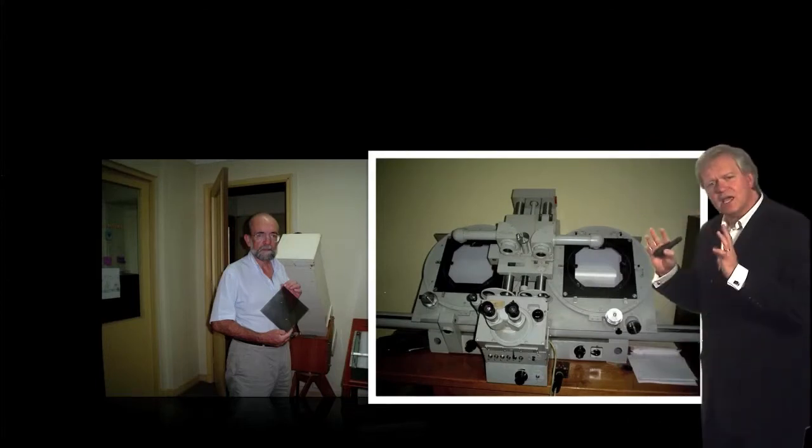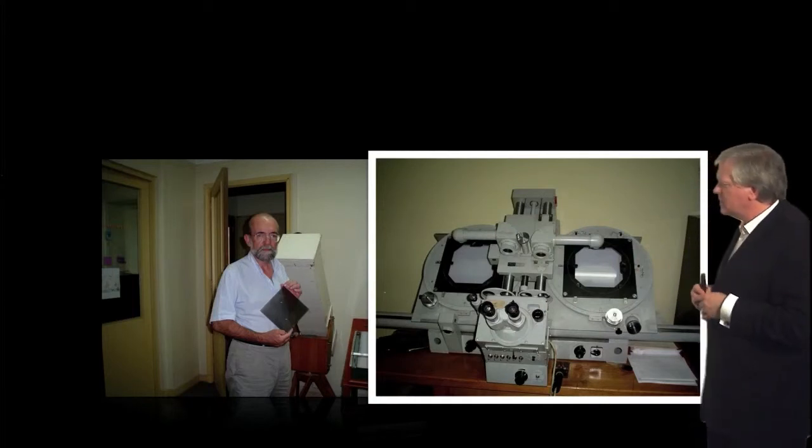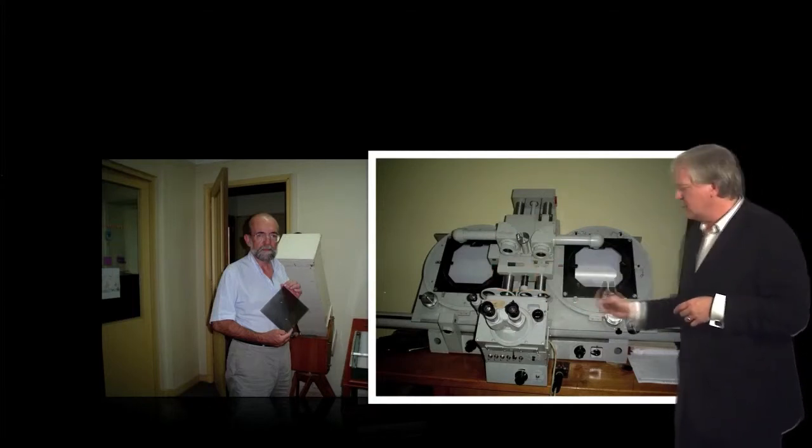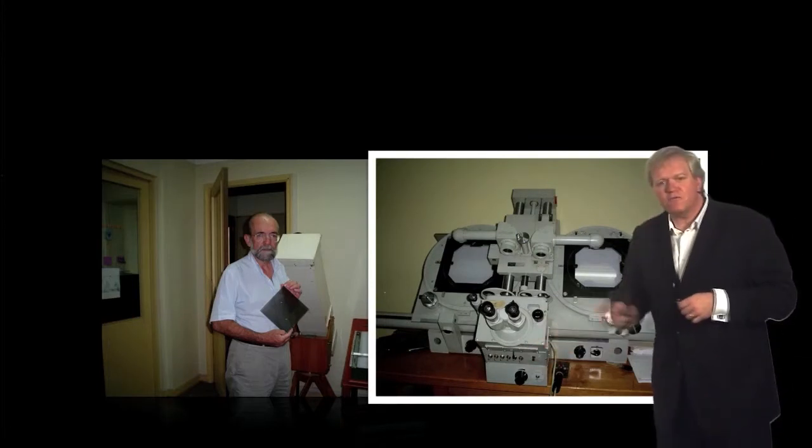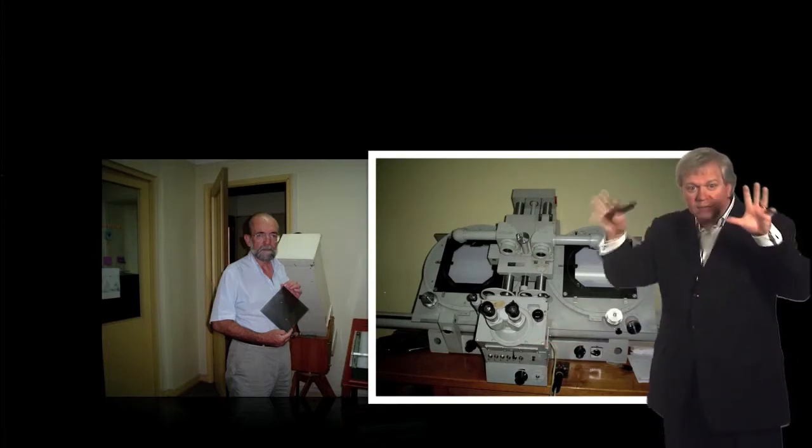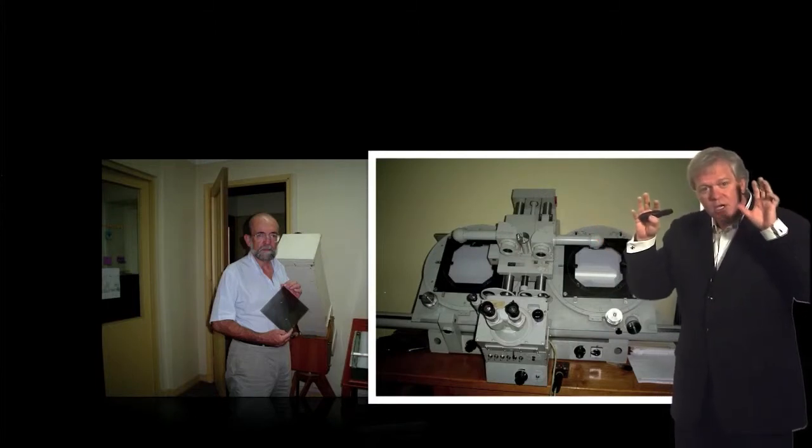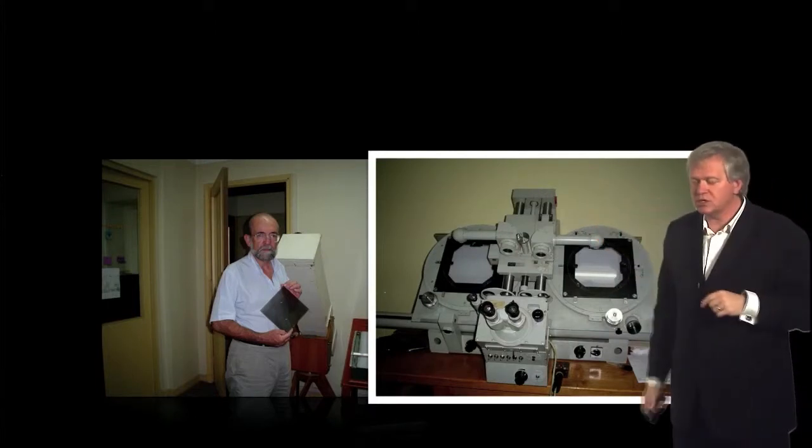They would go through and take a photograph because we didn't have big digital cameras at the time. And they would put a photograph here and a photograph here. There was a little lever they could move back and forth and they would use their brain because we didn't have big computers either at the time to find the new exploding stars.